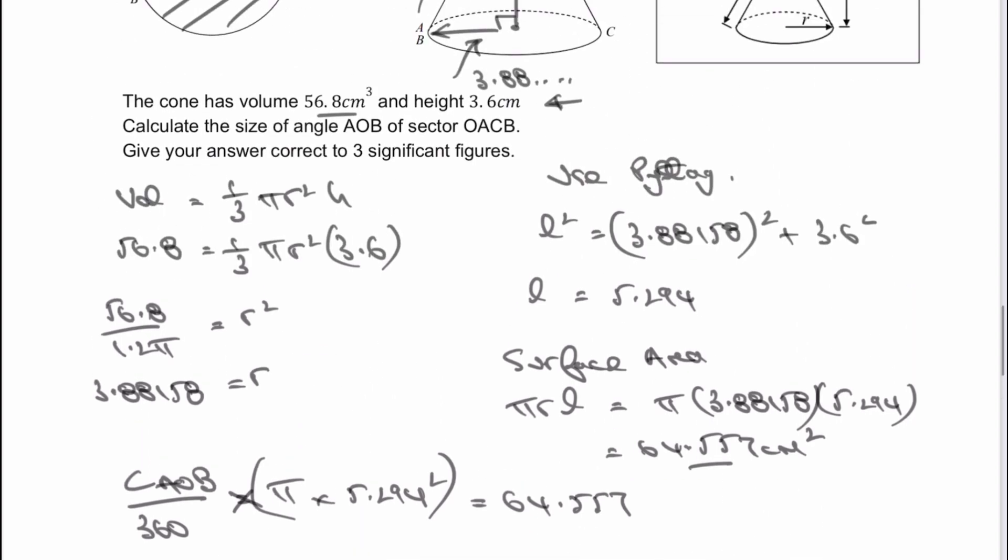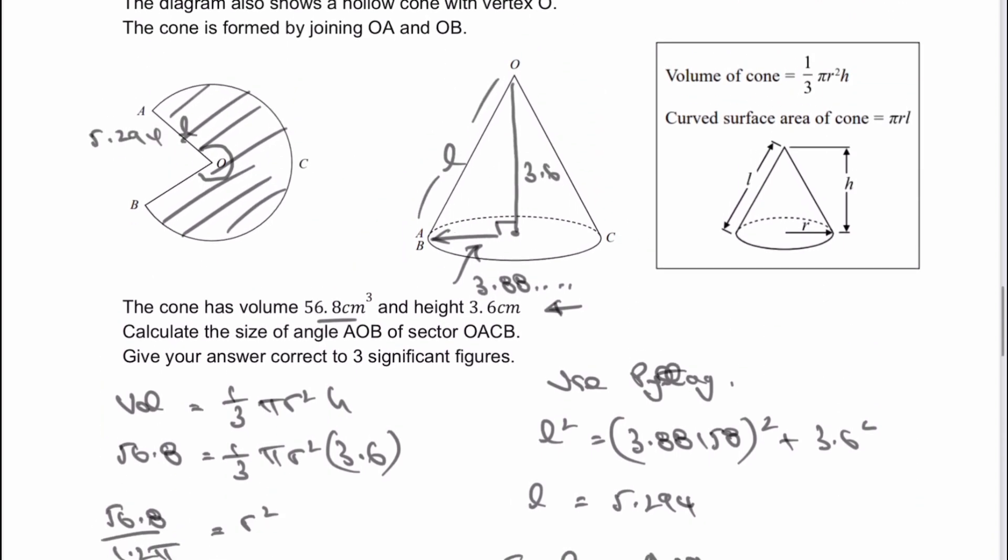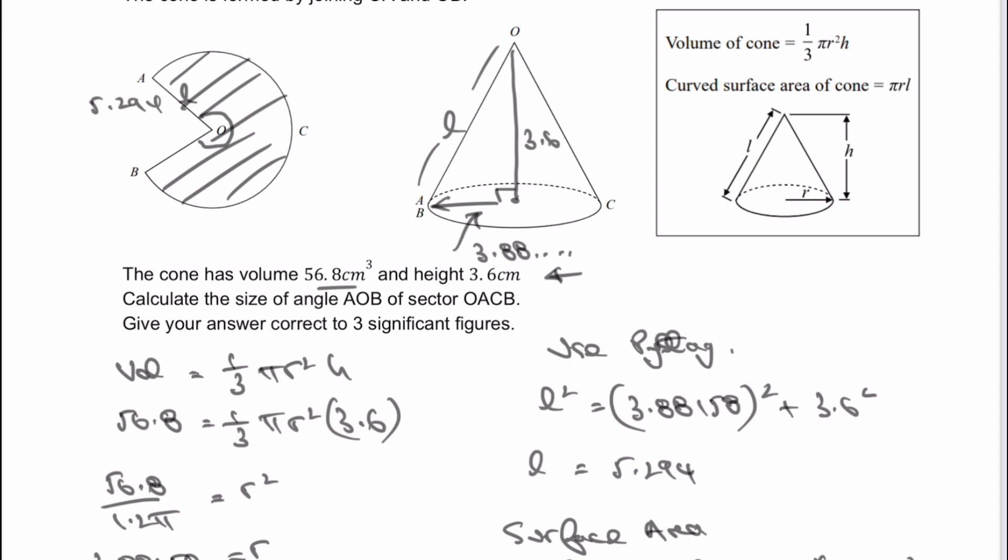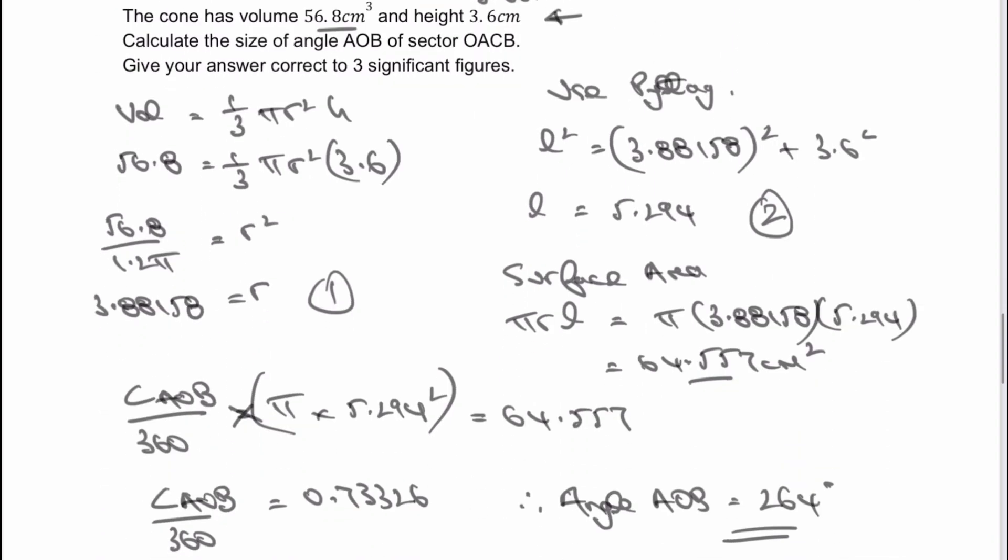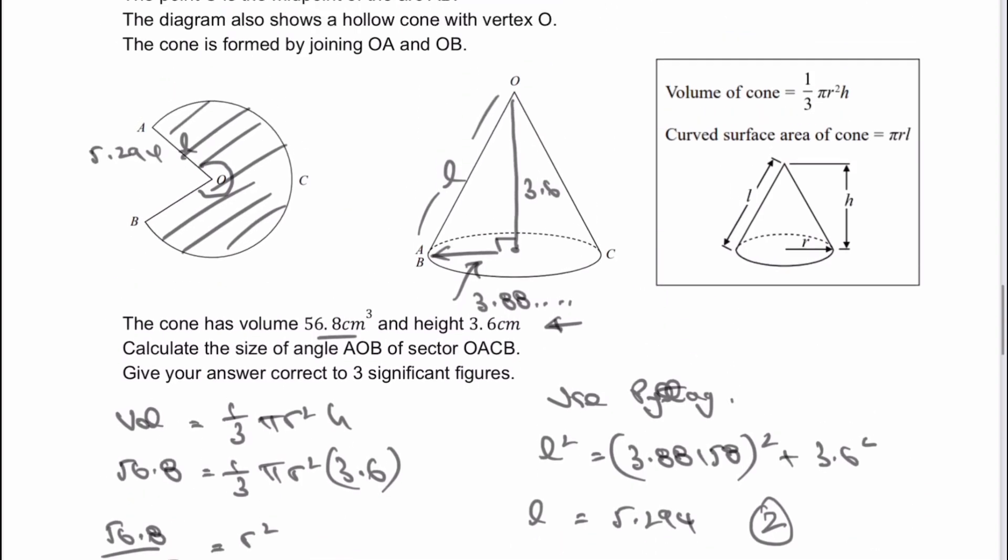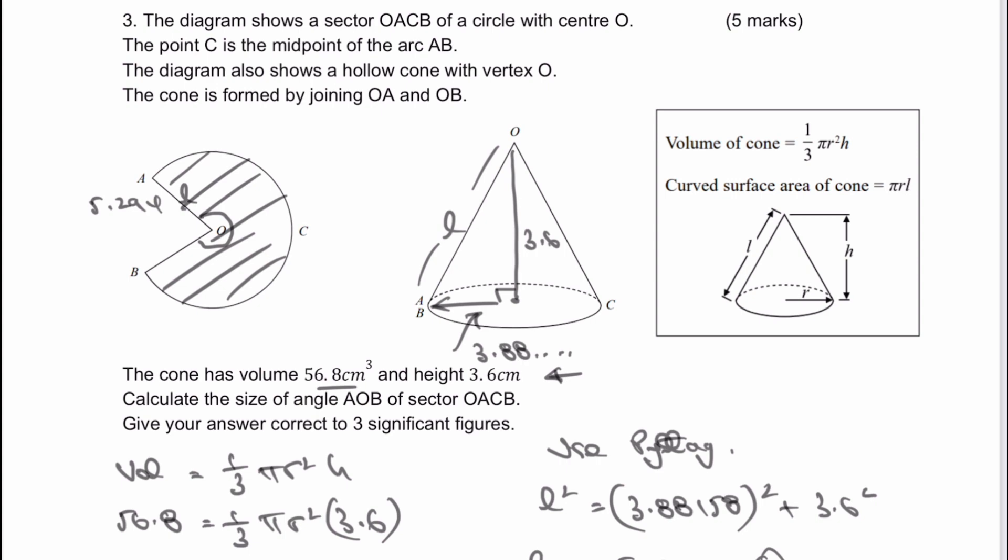So quite a lot of work on this particular question, but if I just run through it very briefly: we used the volume of the cone to work out the value of R, then we used that value of R to work out the value of L using Pythagoras, and then we used that to work out the surface area of the sector itself, and then we used that to work out the value of the angle. So quite a challenging one. Please do let me know in the comments how you got on with it, and I look forward to seeing you inside the next video.